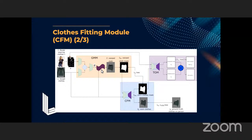The try-on module now receives the mask from the CFM module instead of directly from the GMM. The painting happens in the try-on module; the warping happens in the GMM module. The worn clothes images generated by the CFM module are trained to be close to the ground truth clothes on the target person, and the worn clothes mask generated by the CFM module is trained to preserve the geometric warping of the mask from the GMM module. This is how there is a disentanglement of geometric warping from the painting of the clothes through the introduction of this new module.